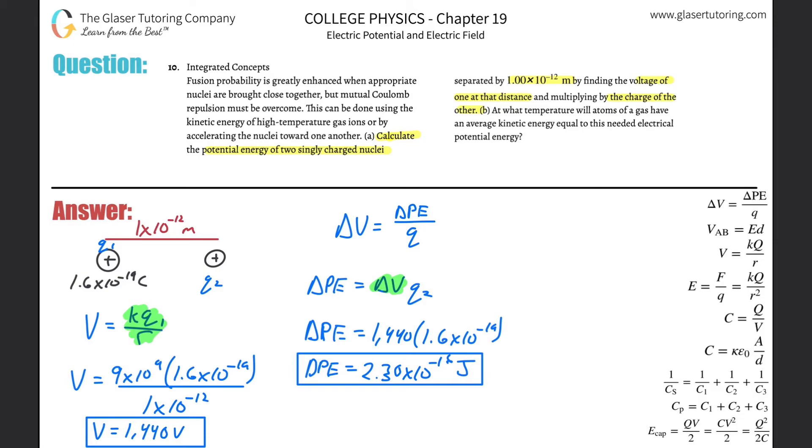Part B: At what temperature will the atoms of a gas have an average kinetic energy equal to this electrical potential energy? So they're asking that the average kinetic energy of the gas should equal this particular potential energy we just calculated. Remember that the average kinetic energy of a gas equals 3/2 times the Boltzmann constant times the temperature. To solve for temperature, T = (2/3)(KE)/k_B. And I'm simply going to substitute this potential energy in for that kinetic energy, because that's what they told us.